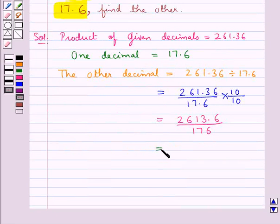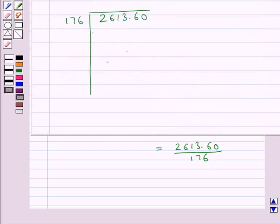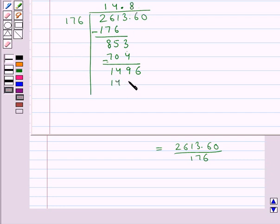That is, we have 2613.60 divided by 176. Let us now try to divide this. 176 1 times is 176. So 261 minus 176 gives us 85. We take this 3 down. Now 176 4 times is 704. 853 minus 704 gives us 149. Now we take this 6 after the decimal down with the number 149, and we put a decimal in the quotient.